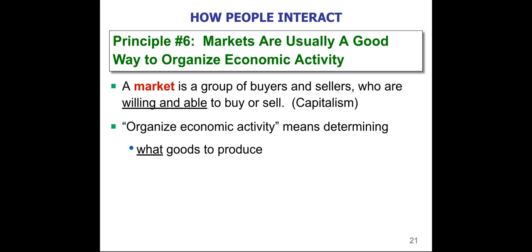The market also determines how the sellers are going to produce the goods. How do you make them? Where do you decide to buy your input resources? What types of labor do you use? What types of machinery, equipment, and technology are needed? That is all up to the sellers to determine.